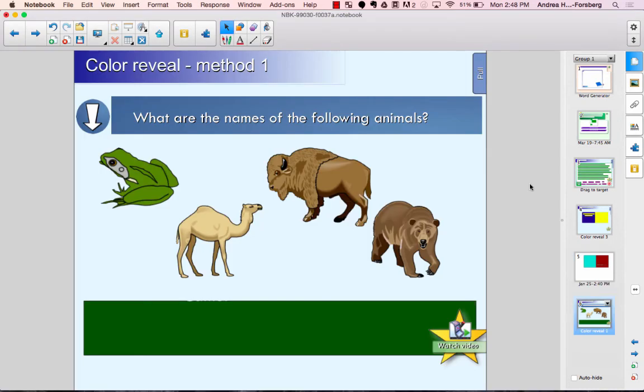A slight variation on the color reveal idea. In this example you have four different types of animals and we are going to reveal the name. And so in this case when you drag the animal down you'll see that its name appears in the green bar below.